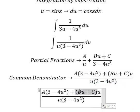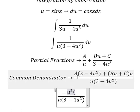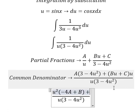Now we arrange the numerator based on powers of u. For the u² terms, we have -4A + B. For the u term, we have C. For the constant term, we have 3A.